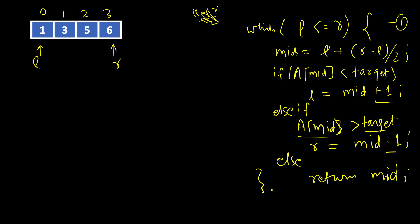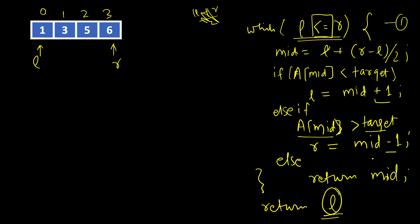Another confusion arises after the loop ends — because of the termination condition, either l has crossed r. Then what should be returned: r, l, l plus 1, r minus 1, or some other combination? Here we will return l, and we will use l less than or equal to r as the loop condition.